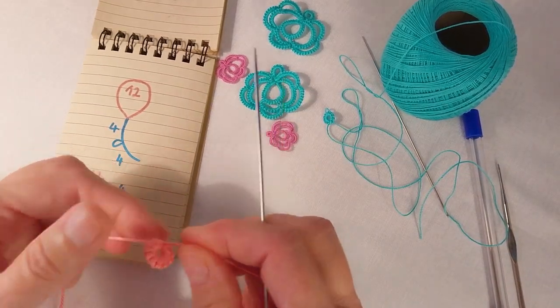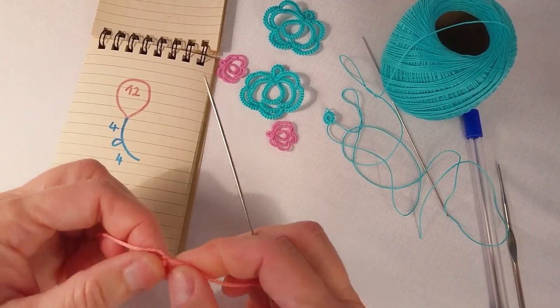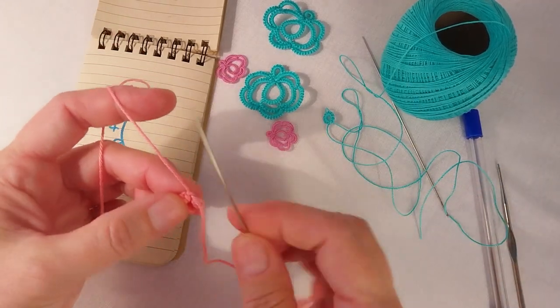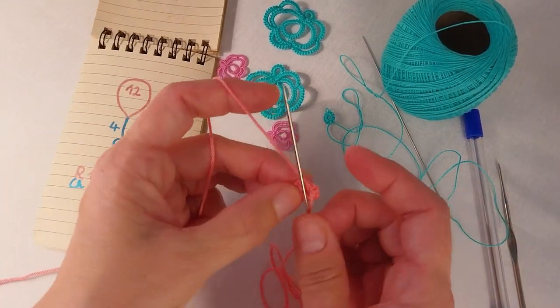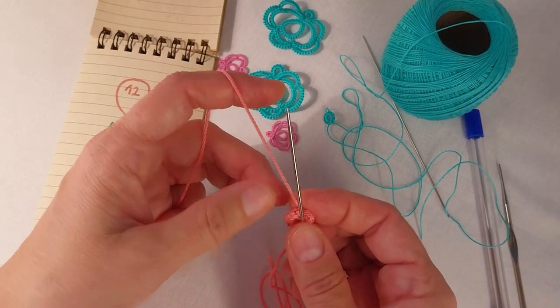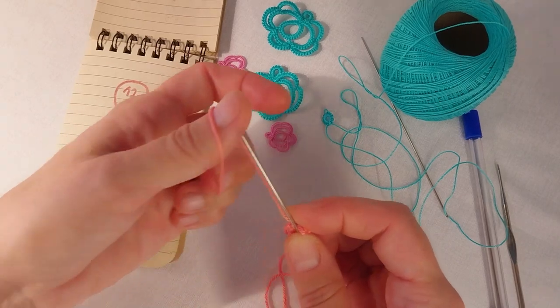I already made the ring so this is the finished ring and I closed the ring so it cannot be opened. What I am going to do is put my needle on top of the ring right to the knot and holding it tight, and I am going to make 4 double stitches.